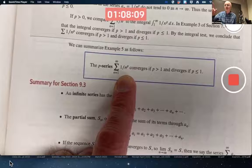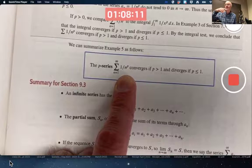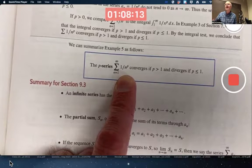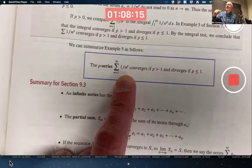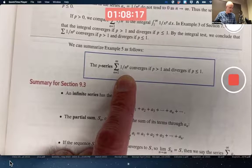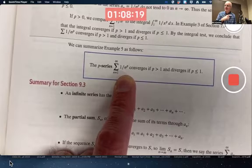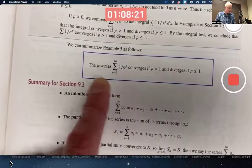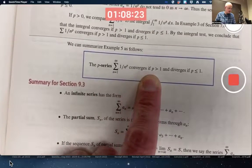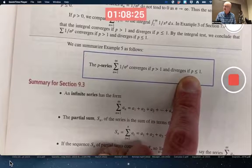Remember the case where p equals 1, the antiderivative was a logarithm and logarithms do go to infinity as the input goes to infinity. Therefore, by that integral test on the previous page, this series called the p series converges if p is bigger than 1 and diverges if p is less than or equal to 1.